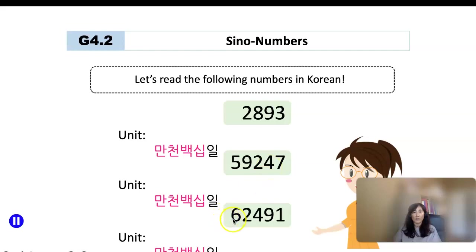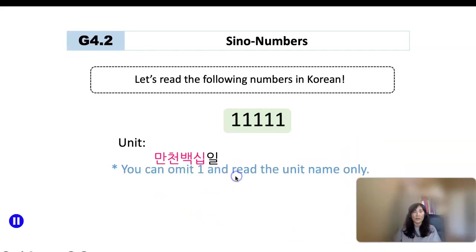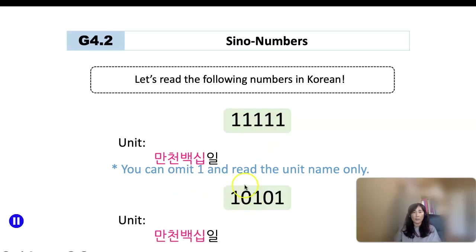How about 62,491? Same thing: 육만이천사백구십일. Sometimes when you see a number like 11,111, you can omit the number one and just read the unit name: 만천백십일. And if a number has zeros like 10,101, you just leave out the zeros: 만백일.